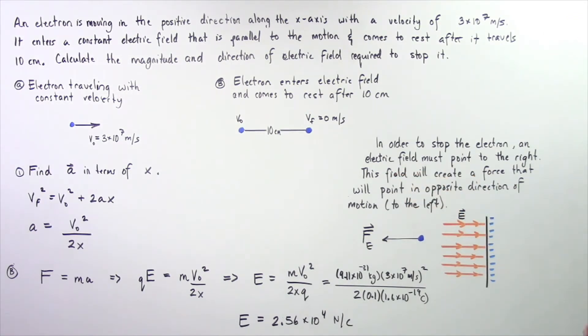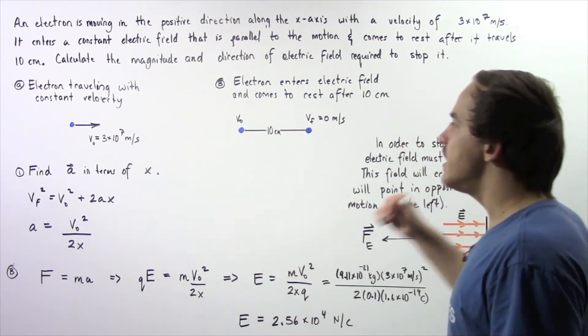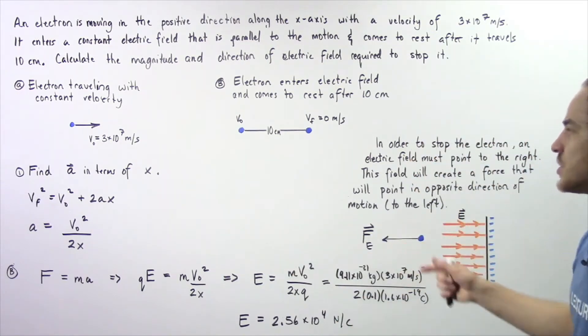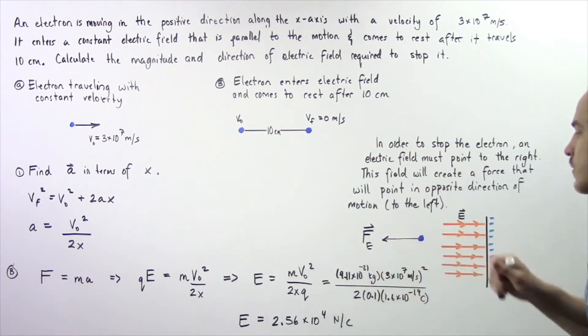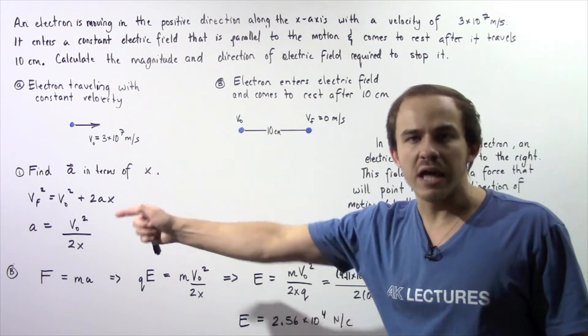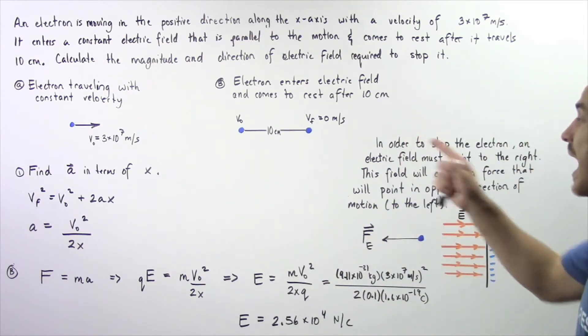This field will create a force that will point in the opposite direction, meaning to the left. The force created by the electric field points to the left, and that is what stops our electron.